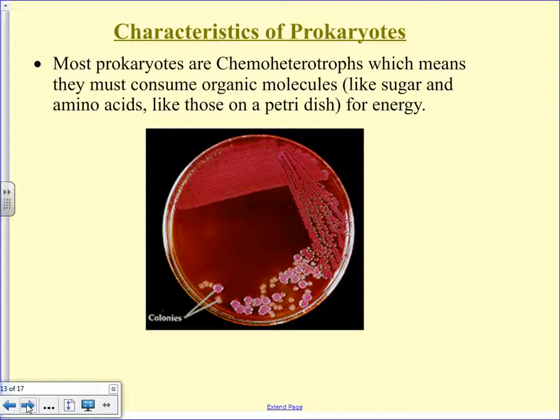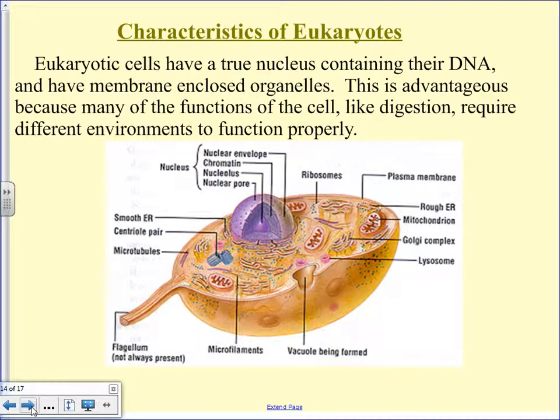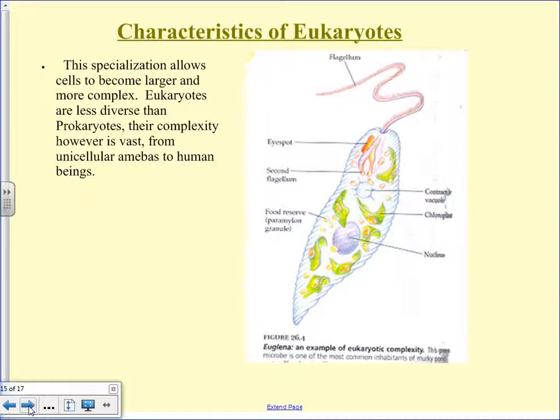Most prokaryotes are chemoheterotrophs — they consume organic molecules for energy. There are some that are photoautotrophs; blue-green algae would be an example. Eukaryotic cells, obviously, we've talked about a lot — they have a true nucleus, all the membrane-enclosed organelles, and are specialized. Prokaryotes don't have any specialization.